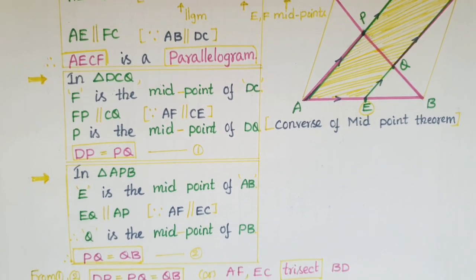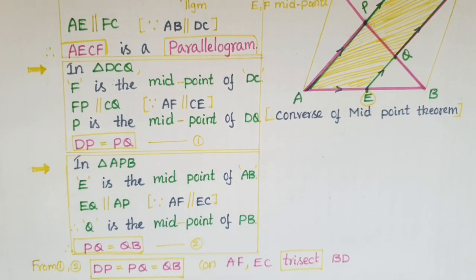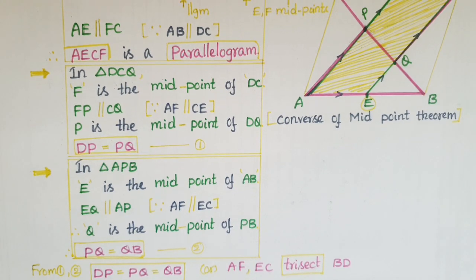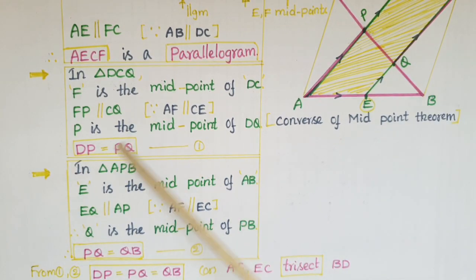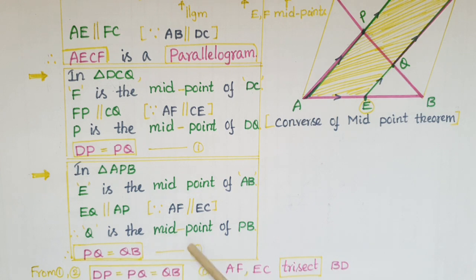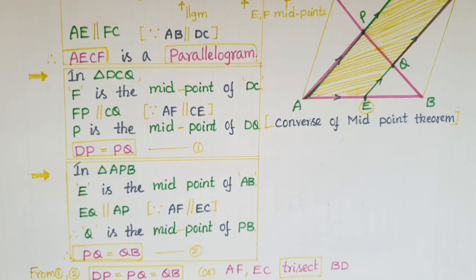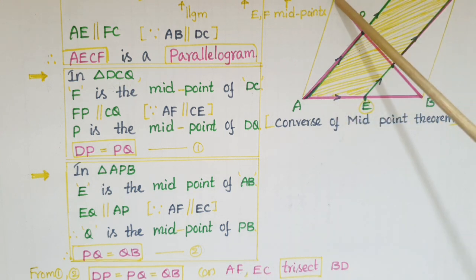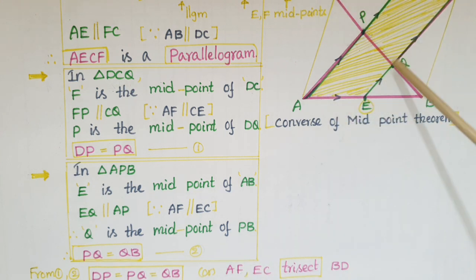From equations 1 and 2, DP is equal to PQ and PQ is equal to QB. Therefore, DP is equal to PQ is equal to QB, which proves that AF and EC trisect the diagonal BD.